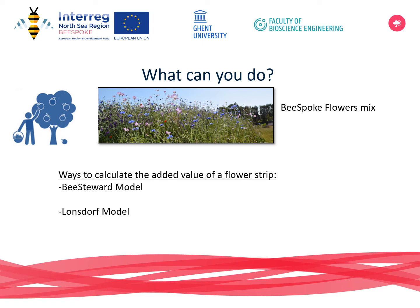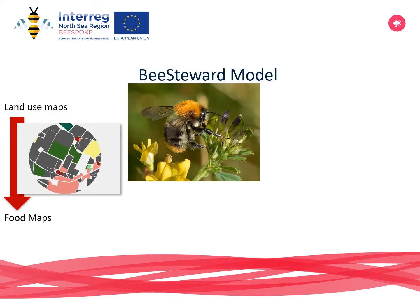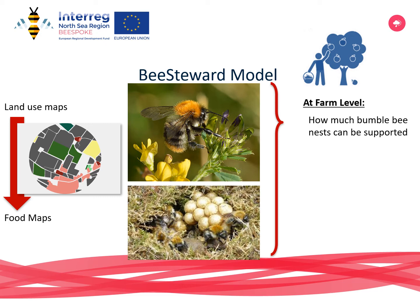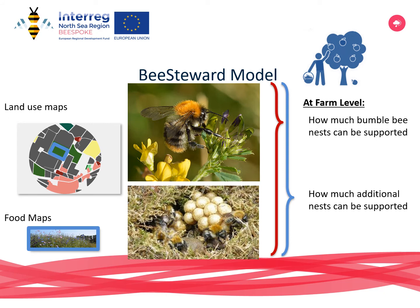We make use of existing models to calculate the added value of a flower strip — the Bee Steward model, for instance. Here, land use maps are translated into food maps for bumblebee species, and it calculates if the environment can support nest development of these species. At the farm level, one can introduce flower strips and see how many additional nests can be supported. Within Beespoke, there are predictions ongoing to look at the size and distribution of flower strips and assess their added value for bumblebee nest development.